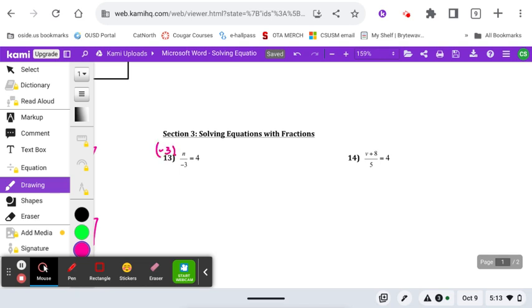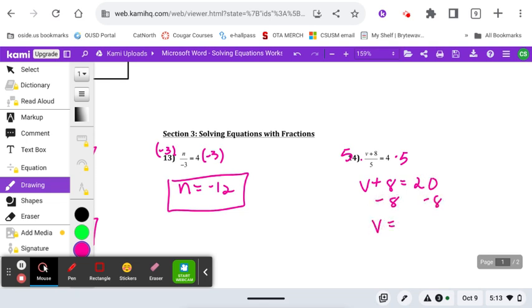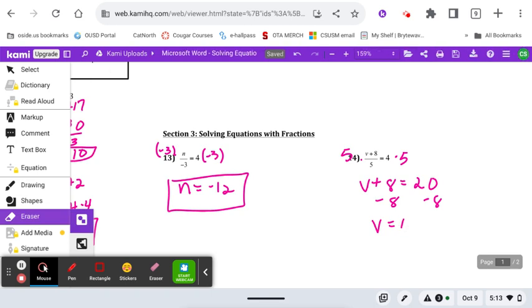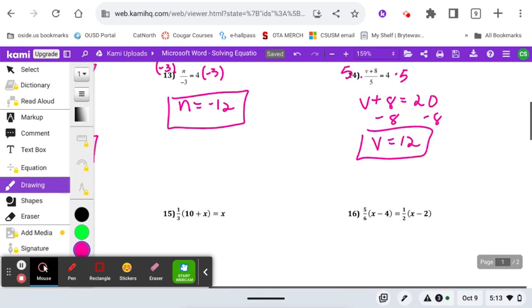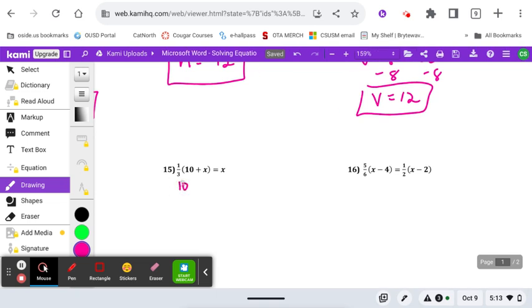Multiply both sides by negative three. Multiply both sides by five. One-third of ten is top times top, bottom times bottom.